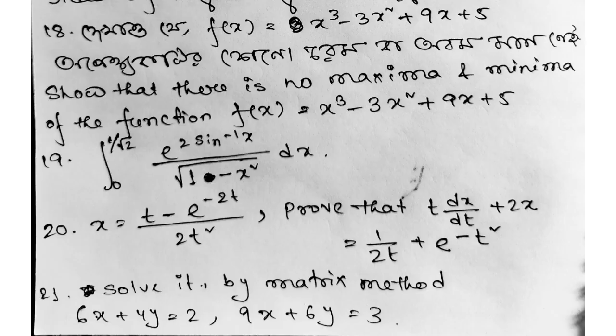Next question: f(x) equals x cube minus 3x square plus 9x plus 5. Show that there is no maximum or minimum value for this function.